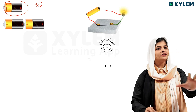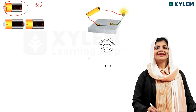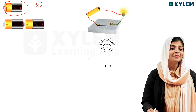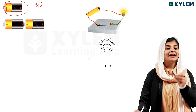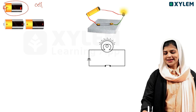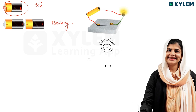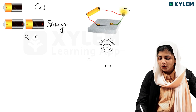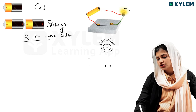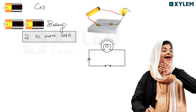The negative terminal and the positive terminal together make up the cell. A battery means two or more cells combined together. If there is just one cell, we call it a cell; if there are two or more cells, we call it a battery.